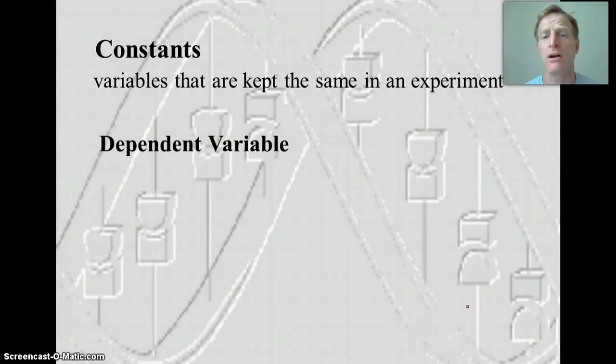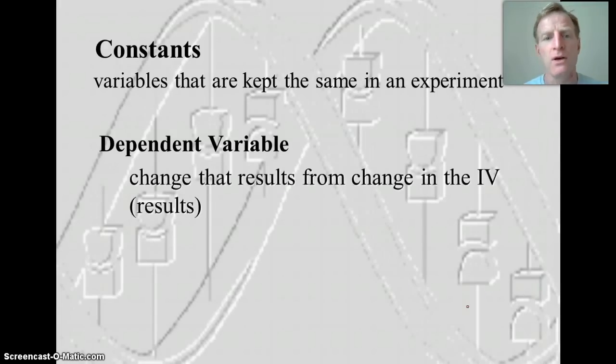And the dependent variable in our experiment is the results. So a lot of people confuse independent variable, dependent variable. Remember, the dependent variable depends on the independent variable. If your hypothesis is correct, then that nitrogen, that nutrient, should affect the plant growth. It will depend on whether or not those plants got the nitrogen in terms of how much they grew. So the dependent variable is the change that results from the change in the independent variable.